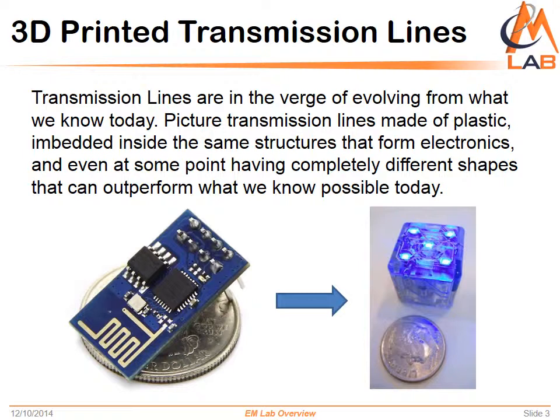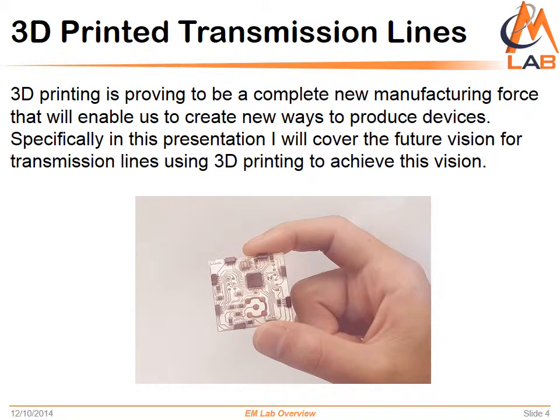Transmission lines are on the verge of evolving from what we know right now. Picture a transmission line made of plastic without any metal — picture it embedded inside the same structures that form electronics, and even at some point picture them completely different than what you have seen today, with different shapes that can outperform what we know is possible today.